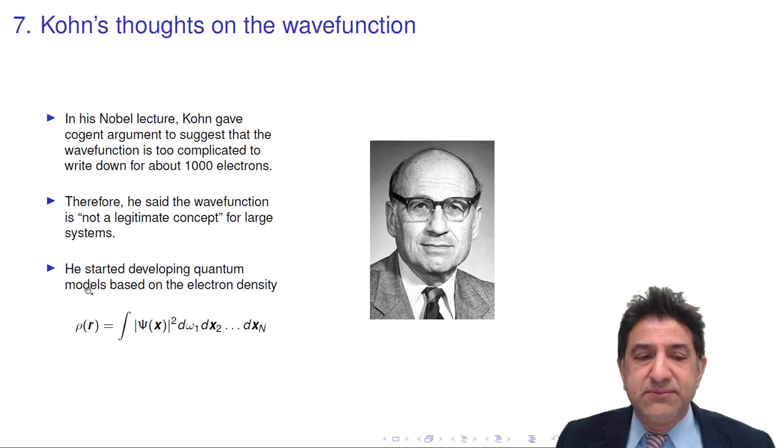He started developing quantum models based on the electron density. And the electron density is just where the electrons are. It's the integral of the square of the wave function, which tells you the probability distribution for all the electrons. And you have to integrate those over all the coordinates of all the electrons except for one. And if you're not interested in whether it's spin up or spin down electrons, you can integrate out over the spin coordinate of the first electron as well.